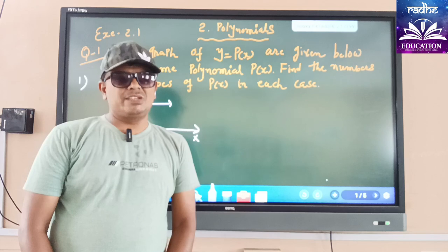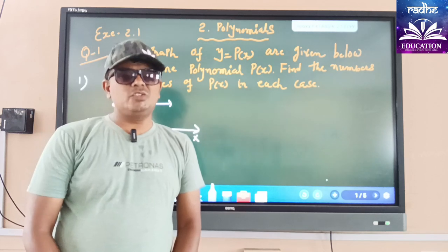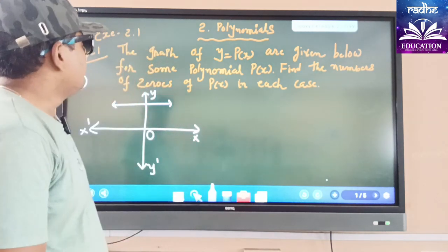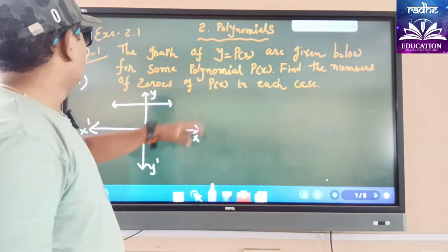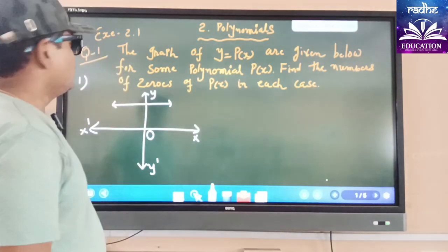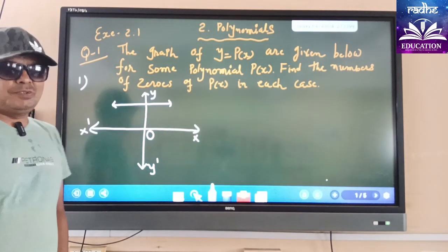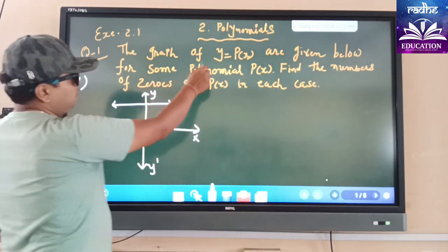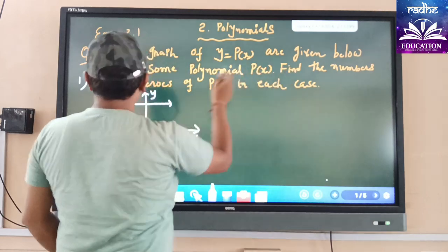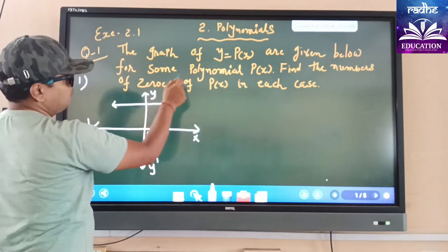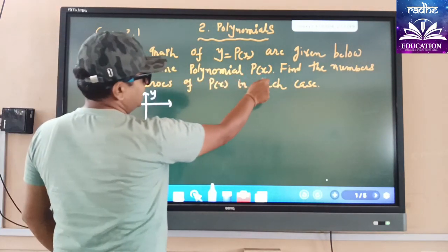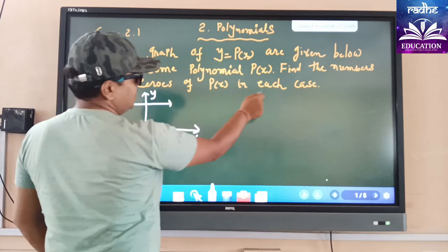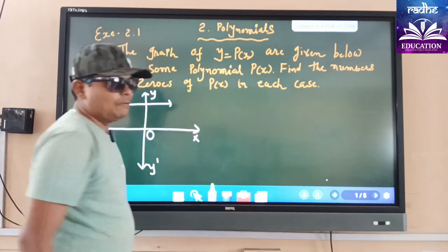Today we will see the exercise. The exercise is very easy, so we will see it one by one. Chapter number two, polynomial exercise 2.1. The graph of y equals to p(x) is given below for some polynomial p(x). Find the number of zeros of p(x) in each case.